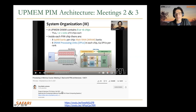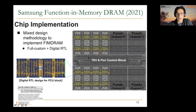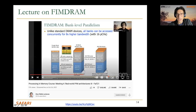Another real-world architecture discussed was FIMDRAM, based on HBM2. It has compute-capable layers containing PCU blocks — processing units connected to memory banks. Looking more closely, the PCUs are SIMD units with 16 lanes and 16-bit precision. We covered FIMDRAM in lecture 4, and the link to that lecture is provided here.